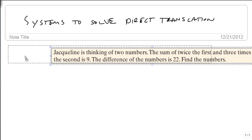We're now going to use systems to solve direct translation problems. A direct translation problem is one where we get a little bit of English and we have to come up with the math for it.